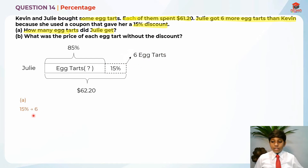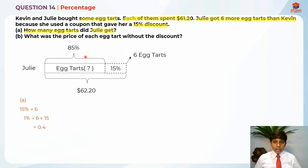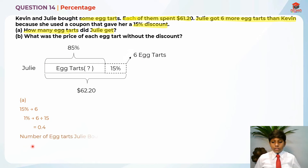So in Part A, 15% represents 6 egg tarts. I'm going to find 1% first. So 1% is 6 divided by 15, which is 0.4. In order to find the number of egg tarts that Julie bought, we just need to find 100%. So 100% is 0.4 times 100. The number of egg tarts Julie bought is 100%, which is 0.4 times 100, equal to 40. And 40 is the answer for Part A.